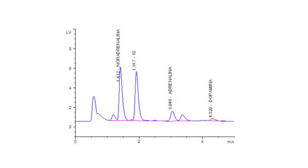This is the typical chromatogram of the level 2 control where you can see that the peak of the noradrenaline comes out at 1.41 minutes, the peak of the adrenaline at 3.05 minutes, finally the dopamine comes out at 4.32 minutes.